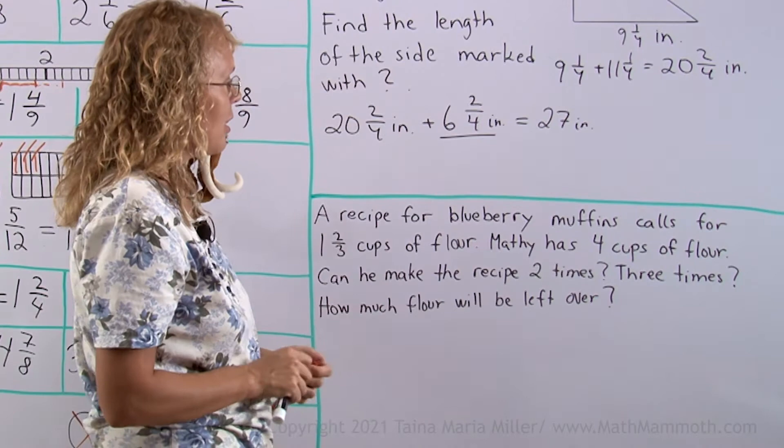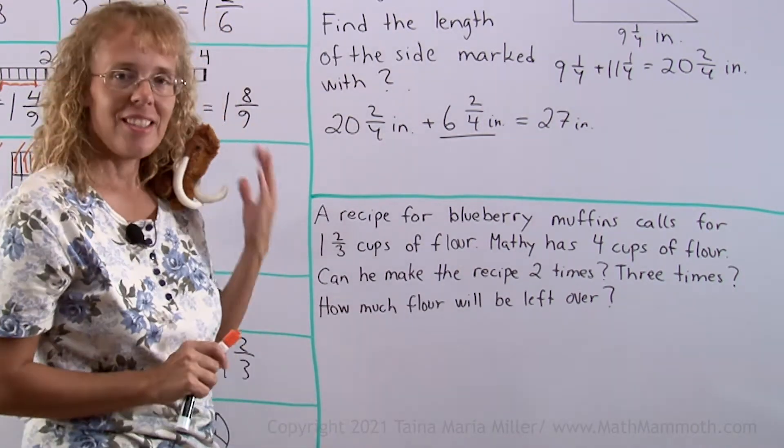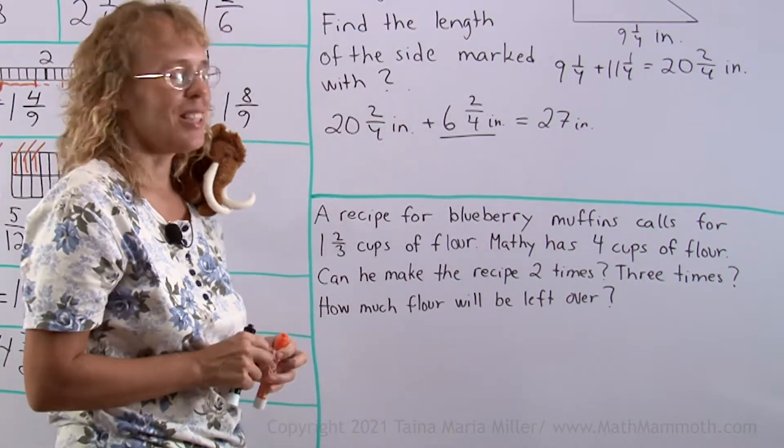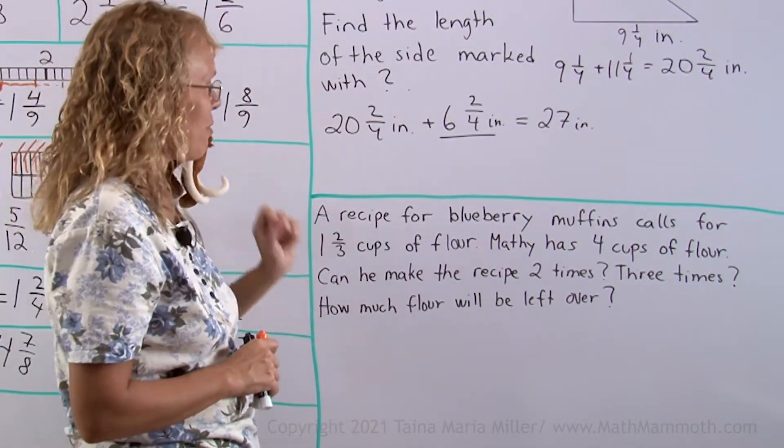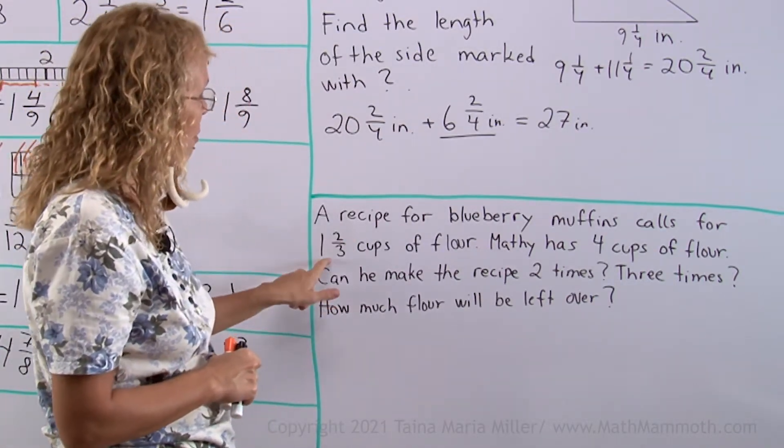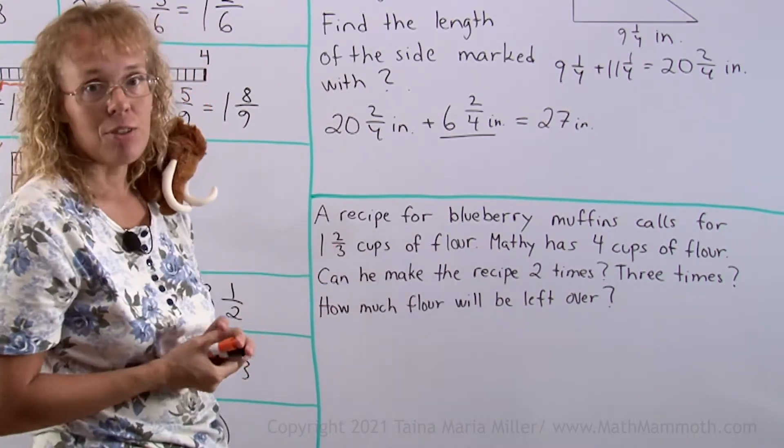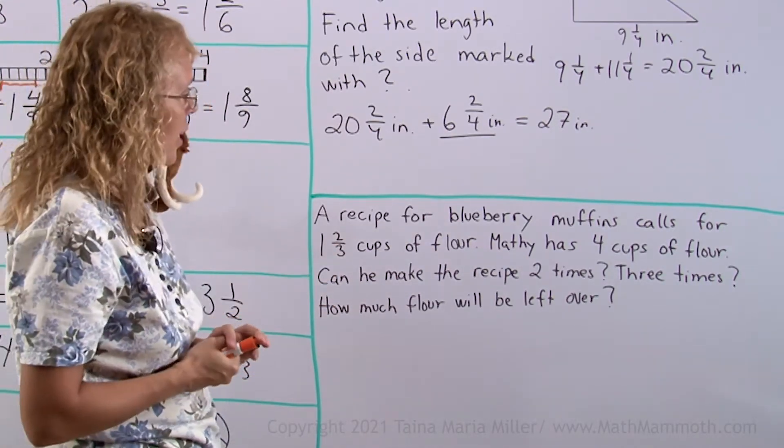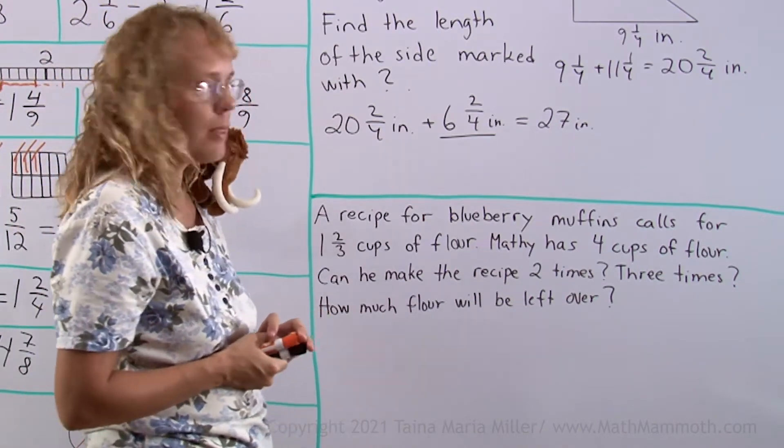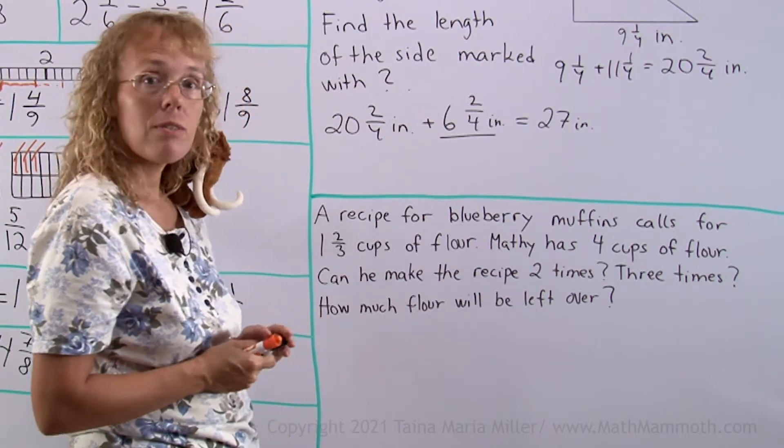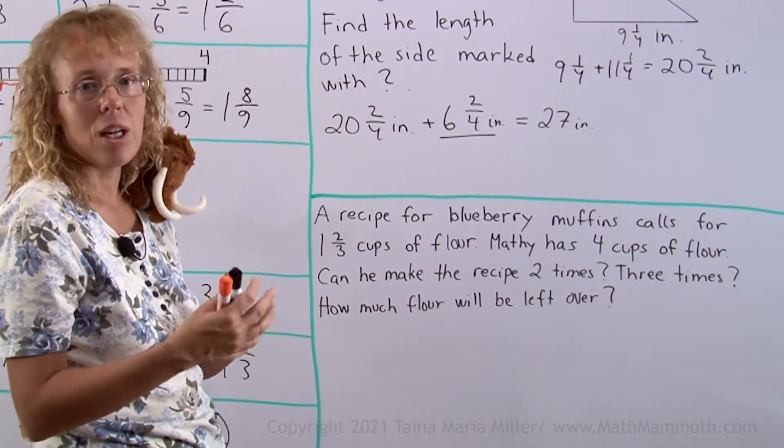Lastly, this one was given to me by Matty, and he just loves blueberries. Again, the word problem has to have blueberries in it. A recipe for blueberry muffins calls for 1 and 2/3 cups of flour. Matty has 4 cups of flour. Can he make the recipe two times? Three times? How much flour will be left over if he makes it two times or three times?